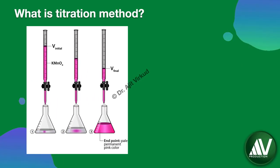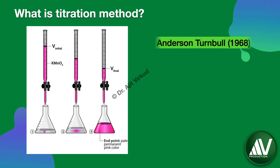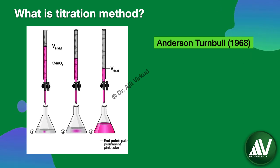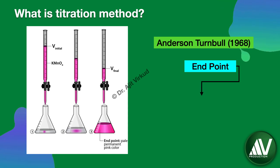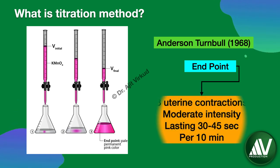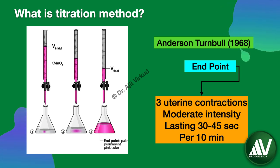Q: What is the titration method of administering intravenous oxytocin? This was first described by Anderson-Turnbull in 1968. Here, the intravenous drip rate is titrated against the uterine response. It is initially started at 10 drops per minute and gradually increased until 3 uterine contractions of moderate intensity, each lasting 40 seconds per 10 minutes, are seen. Once optimum labor contractions are achieved, the same dose or a slightly lower drip rate is maintained until delivery of the baby.